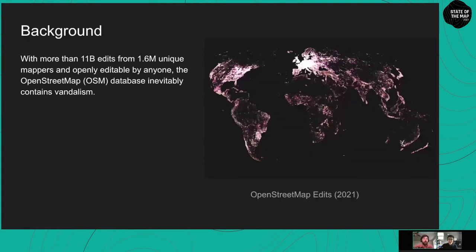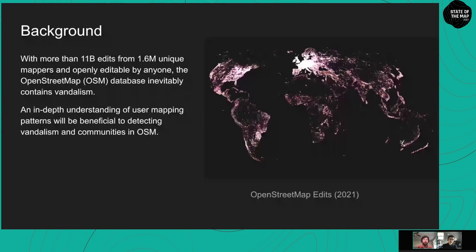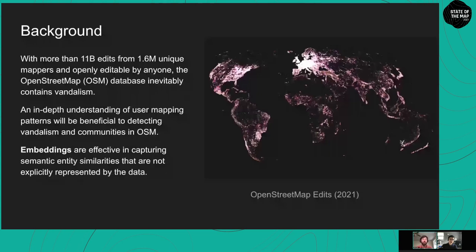For background: OSM is big — more than 11 billion edits from more than 1.6 million contributors — and we're not slowing down. As an online openly editable project, it will inevitably contain some vandalism. However, if we can develop an in-depth understanding of user mapping patterns, we can use these patterns to spot suspicious activity or group specific patterns together to better understand the OSM community. In this work we use user embeddings, a form of AI that captures semantic entity similarities not explicitly represented by the data.